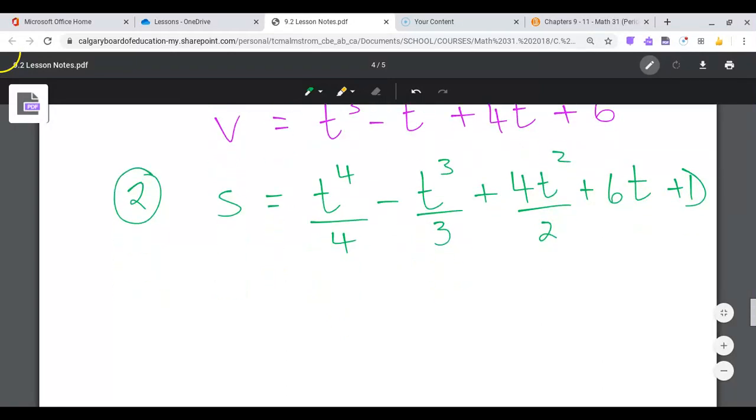And so maybe I'll just leave it like that and tidy it up as I substitute in. So what do I know about this function? I know that s is equal to 4 when t is equal to 1.